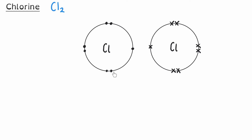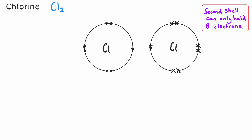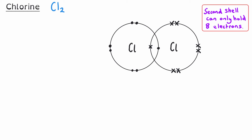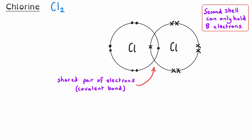Chlorine is in group seven of the periodic table, so it has seven electrons in its outer shell, which can hold eight. One chlorine atom is shown with seven dots and the other with seven crosses. When the covalent bond forms, those electron shells overlap, creating a shared pair of electrons between the two chlorine atoms, giving both atoms eight electrons in their outer shell.